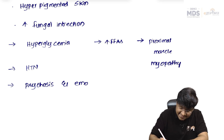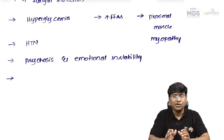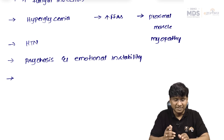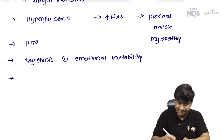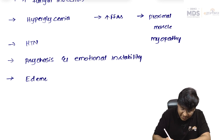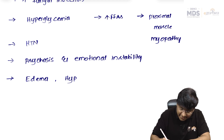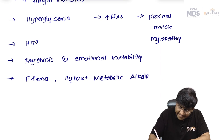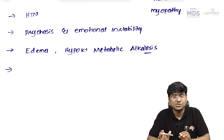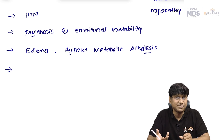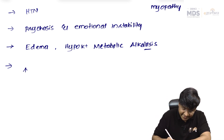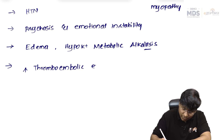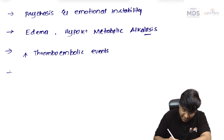CNS manifestations also include emotional instability. In patients with ectopic ACTH, there is excessive activation of ENaC causing edema, and also hypokalemic metabolic alkalosis. These patients are also at increased risk of thromboembolic events.